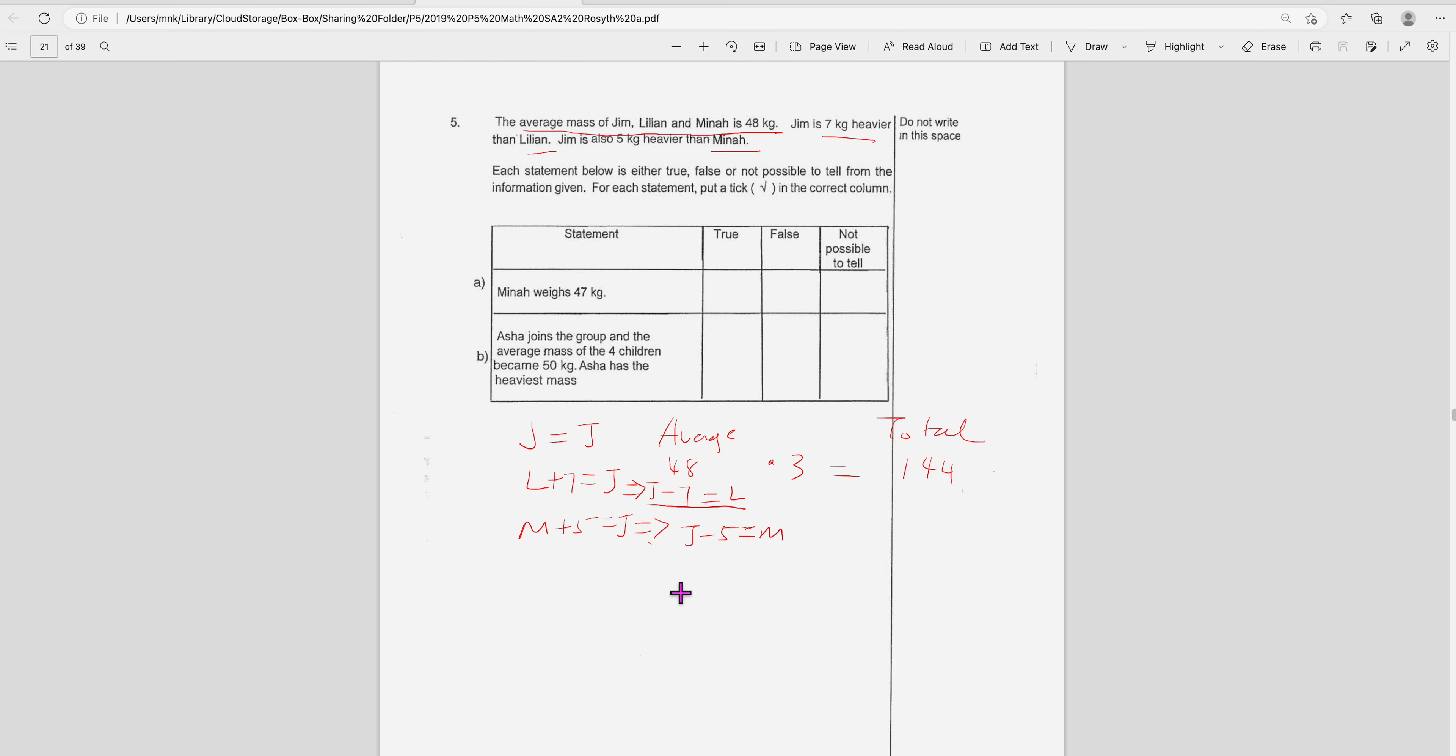So therefore you can add up to total 144. So 144 equals J plus L, which is J minus 7, plus M, which is J minus 5. This is L, this is M, and they add up to 144 because of the total from the average. Then you have 3J minus 12 equals 144. Move the 12 over, it becomes plus, so you have 156 divided by 3. So J equals 156 divided by 3, which is 52.